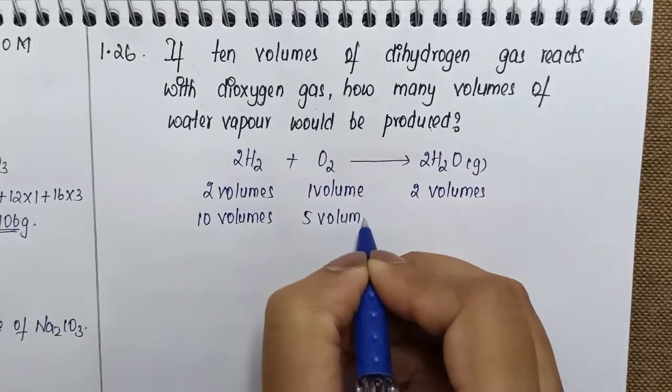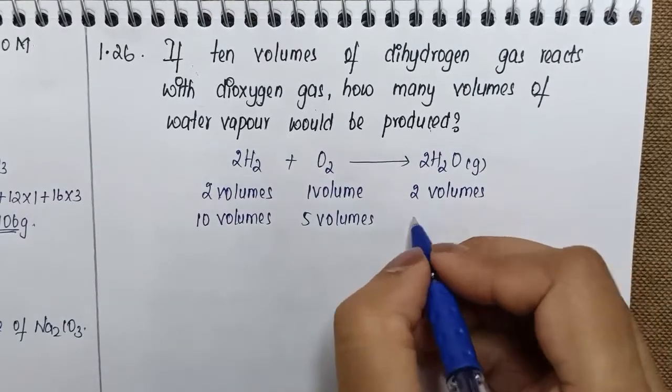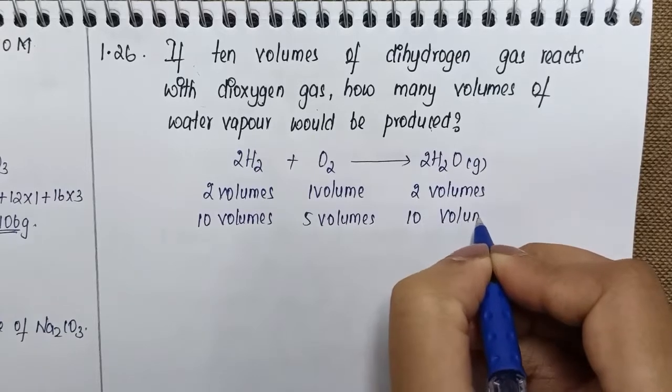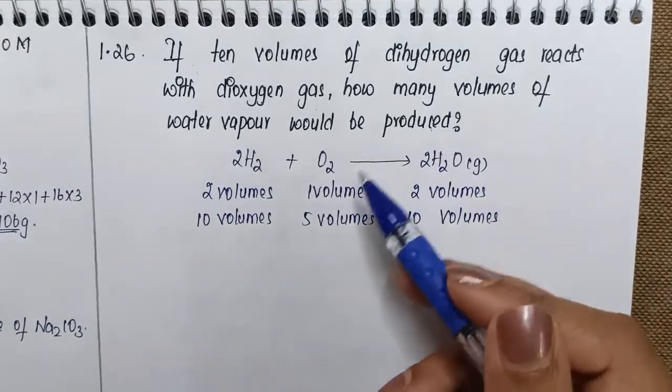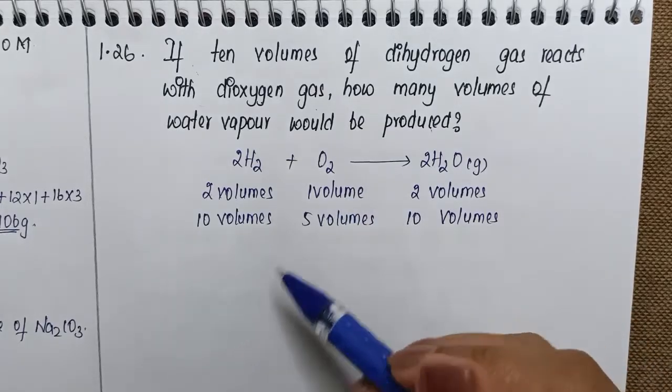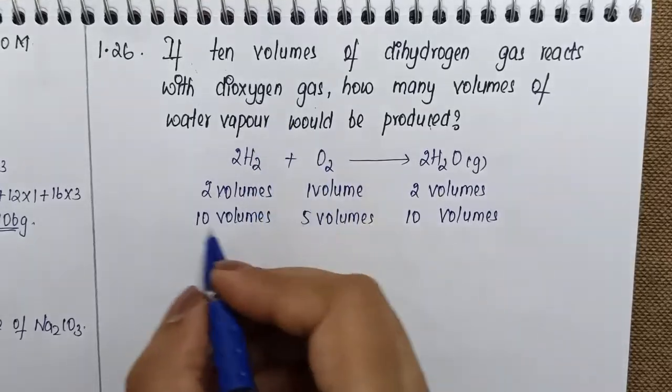So 10 volumes will require 5 volumes to form 10 volumes of water vapor. It's a simple question to find out how many volumes of water vapor would be produced if you have 10 volumes.